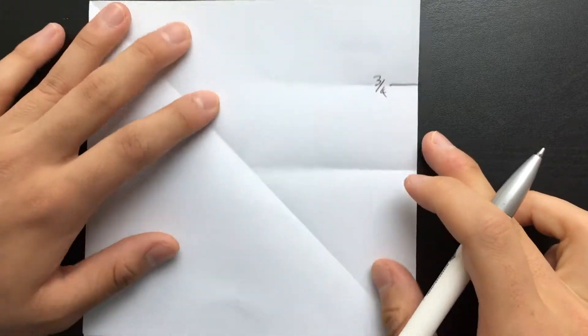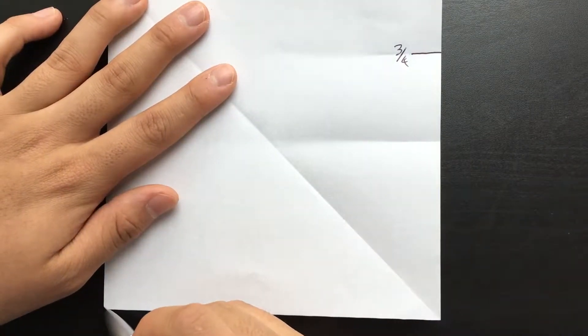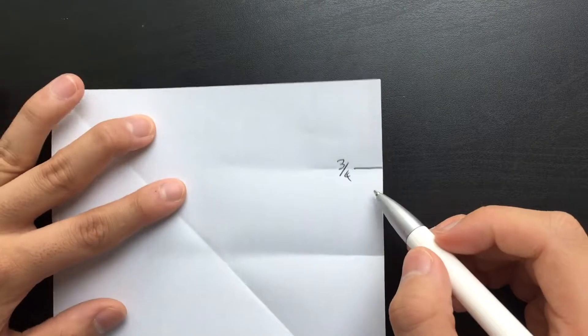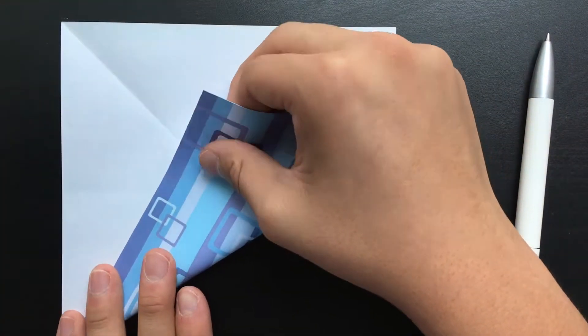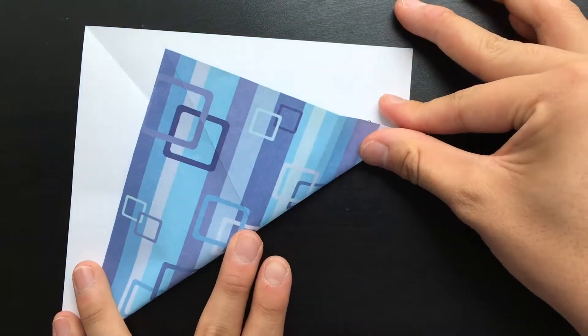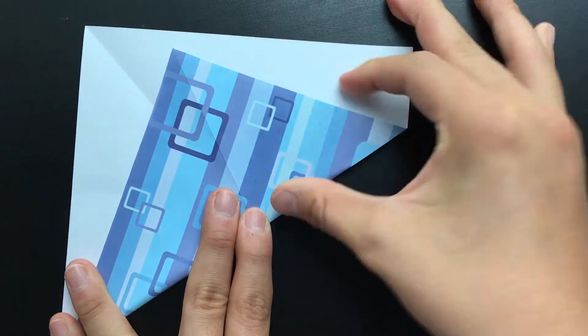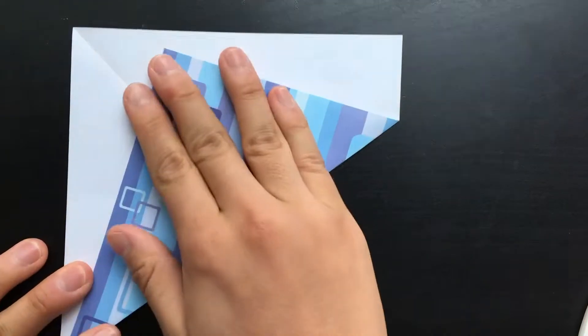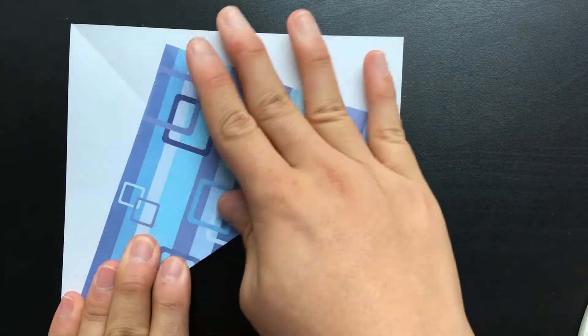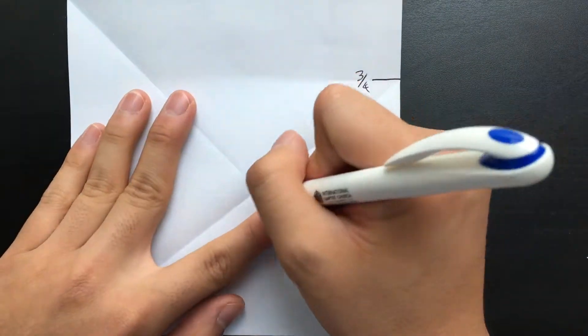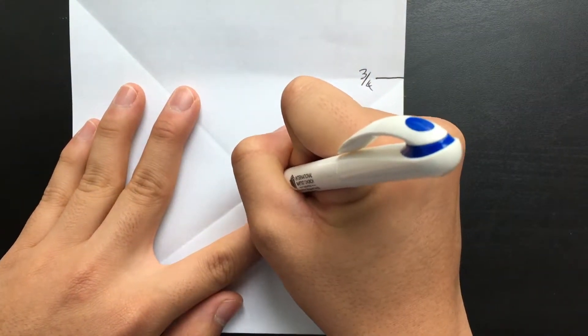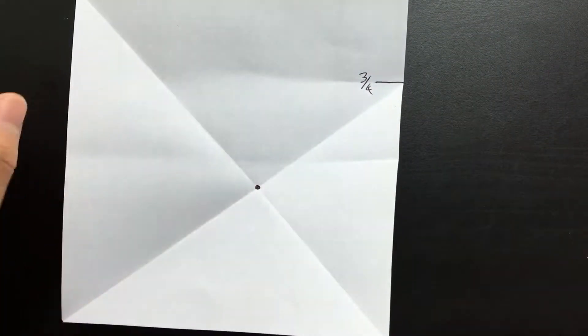What you want to do now is fold from the bottom left corner right here to that point you created, so the 3 fourths line. And you can see that this new line intersects the diagonal at some point. Well, what's special about this point?